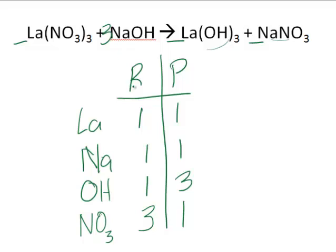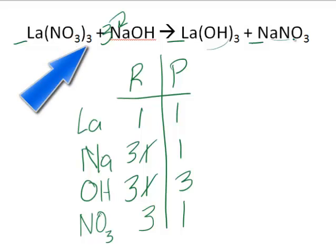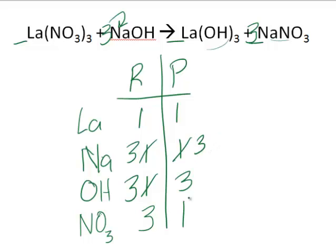So I put a three in front of the La(OH)₃ compound. When I put a three there, the OH's change to three. But I notice the Na also changes to three, so I put a three there as well. Now we balance the NO₃'s — there are three of them on the reactant side but only one on the product side, so I put a three in front of NaNO₃. The Na's change to three and the NO₃'s change to three. Remember it's three NO₃'s, not nine. Now all the atoms and polyatomic groups are balanced, so I fill in ones where no other coefficient was placed.